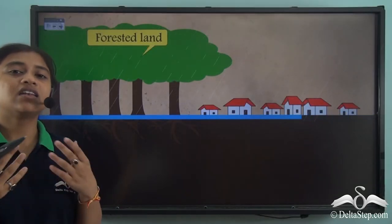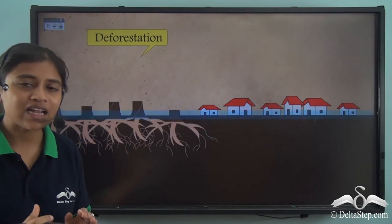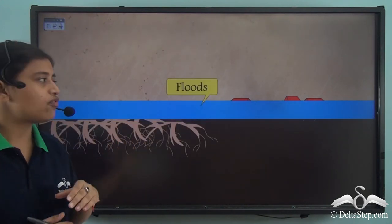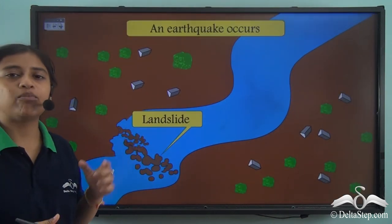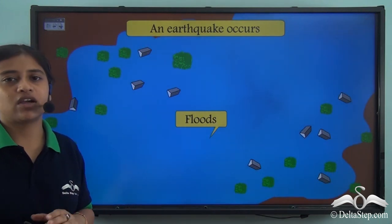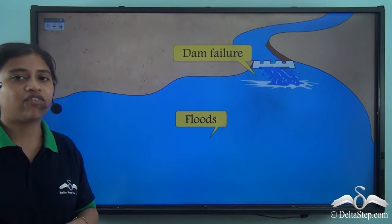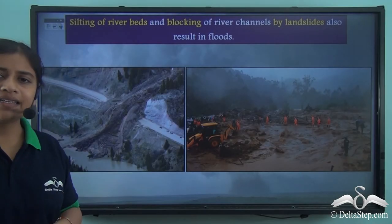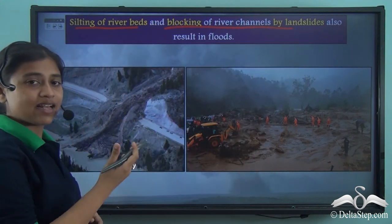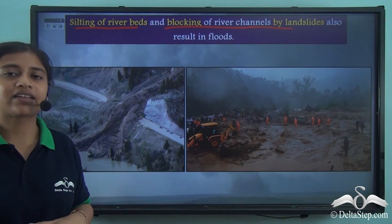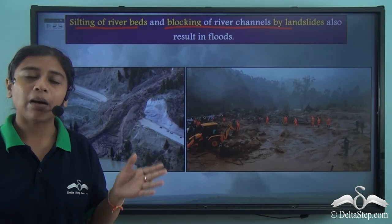Other factors leading to floods include earthquakes causing landslides and blockage of river channels, careless handling of dams leading to dam failure, silting of river beds, and blockage of river channels by landslides. So floods are a slow onset disaster resulting from a number of factors.